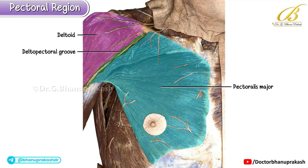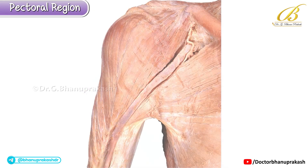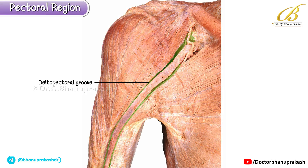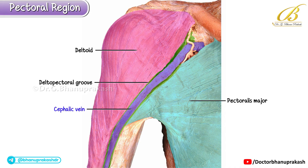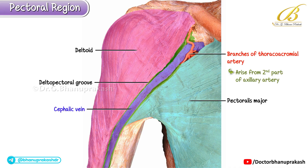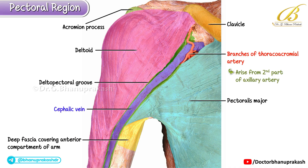Between the pectoralis major and the deltoid muscle there is a shallow groove called the deltopectoral groove, which serves as the pathway for the cephalic vein. In this image we can clearly observe the deltopectoral groove — the shallow depression located between the deltoid muscle and the pectoralis major. Within this groove we can identify the cephalic vein, an important superficial vein of the upper limb. Alongside it we can also appreciate the branches of the thoracoacromial artery, which arise from the second part of the axillary artery and supply the pectoral and deltoid regions. Additionally, the acromion process and the clavicle are clearly visible as key bony landmarks, along with the deep fascia covering the anterior compartment of the arm.